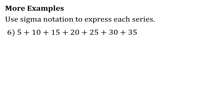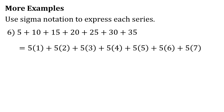First, let's take 5 plus 10 plus 15 plus 20 plus 25 plus 30 plus 35. As you can see, these numbers are multiples of 5: 5×1, 5×2, 5×3, 5×4, 5×5, 5×6, and 5×7. The integers go from 1 to 7, so the formula is 5n. We can express this as the sum of 5n as n goes from 1 to 7.